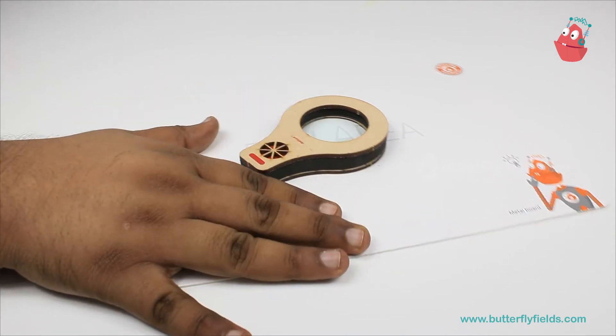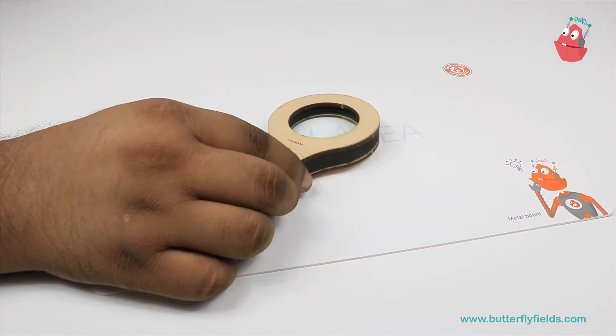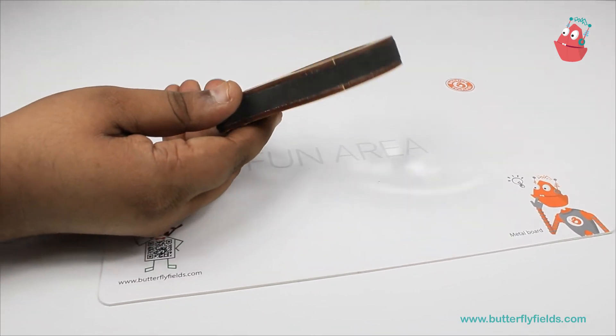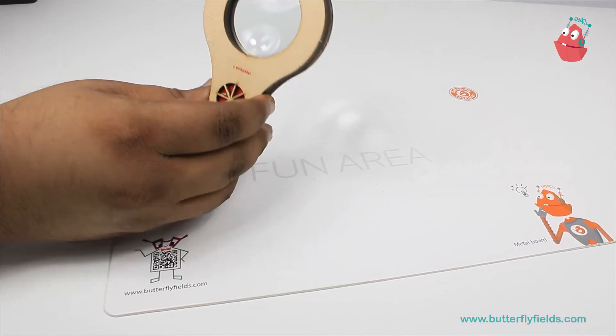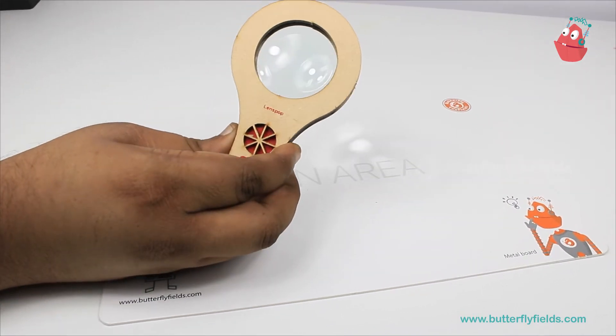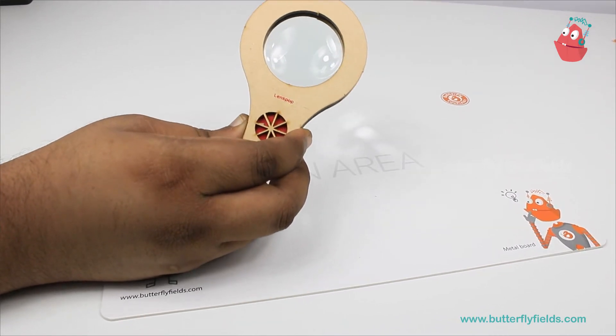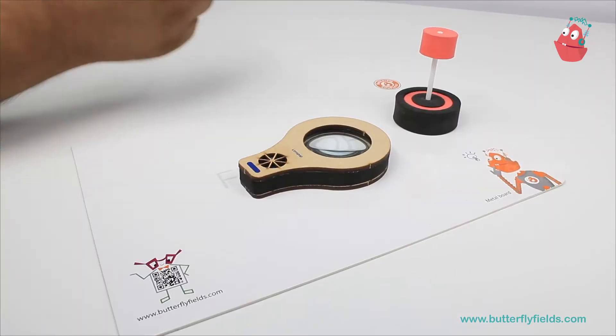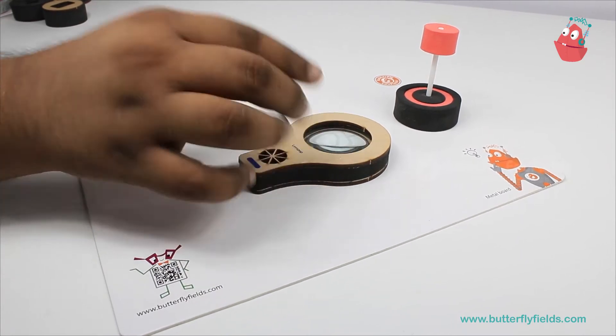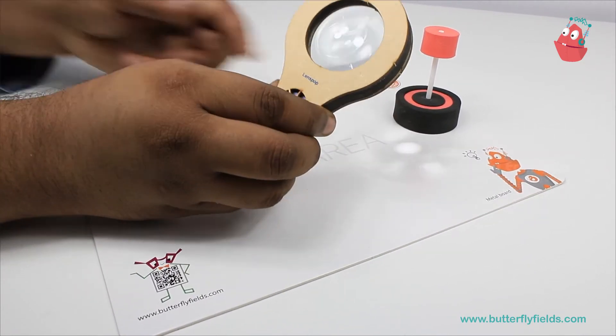Hello everyone, welcome to Tinkle. In this video, we will see the working of the human eye. Human eye basically is a lens, and we have this lens pop in our Tinker Lab. So using this lens pop, we will see how the human eye works. Now, how do we see objects? We see them because of the light.